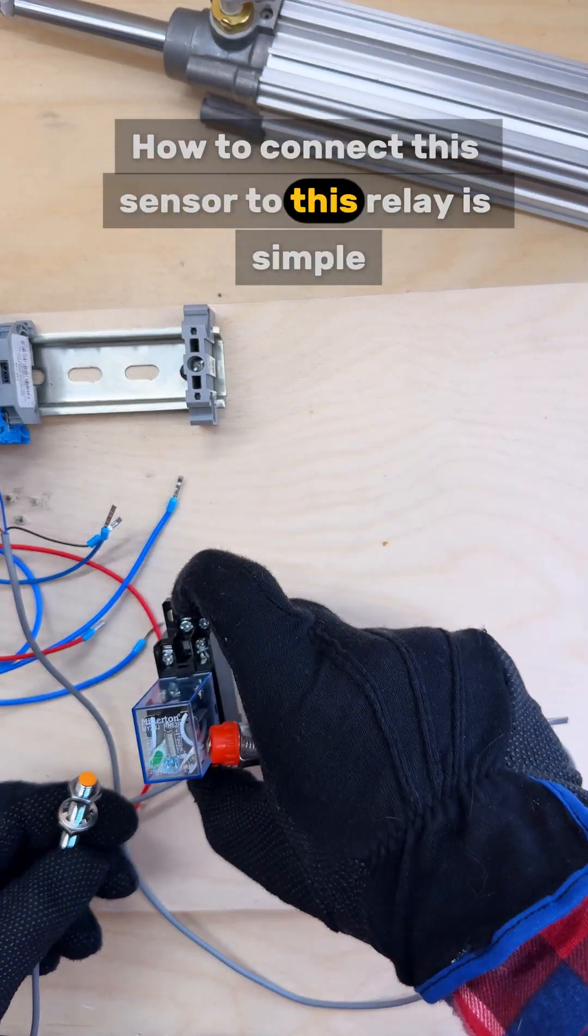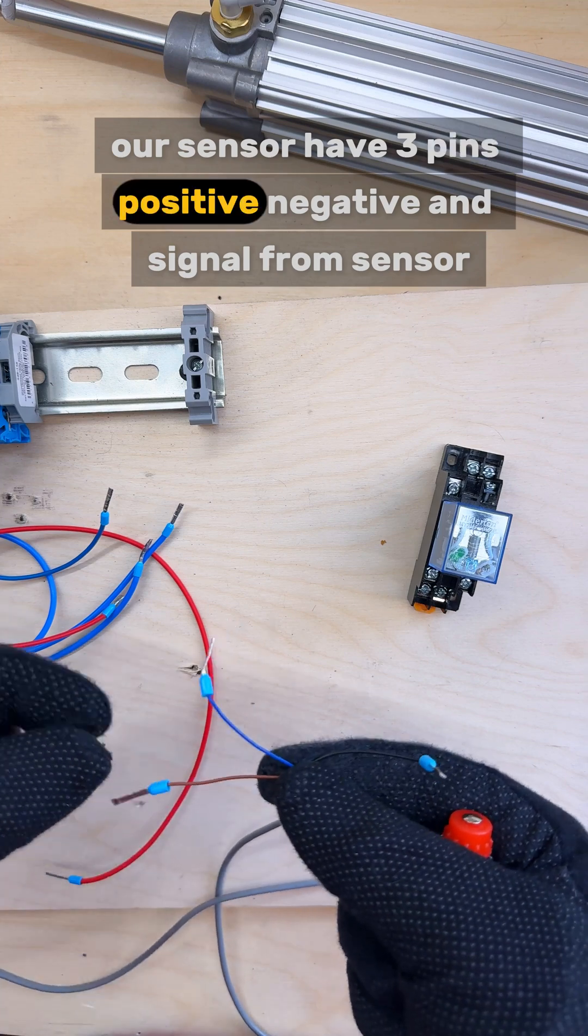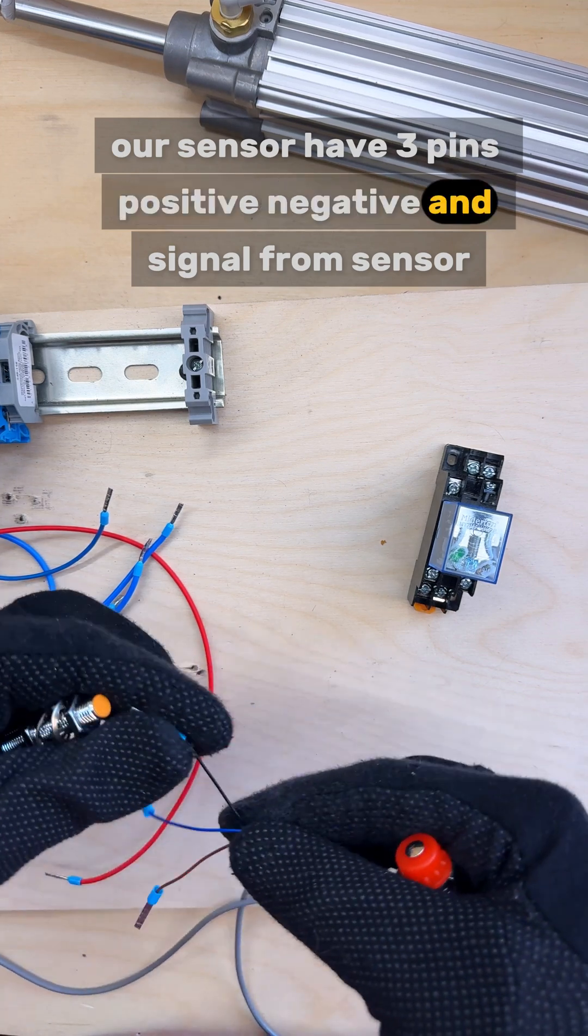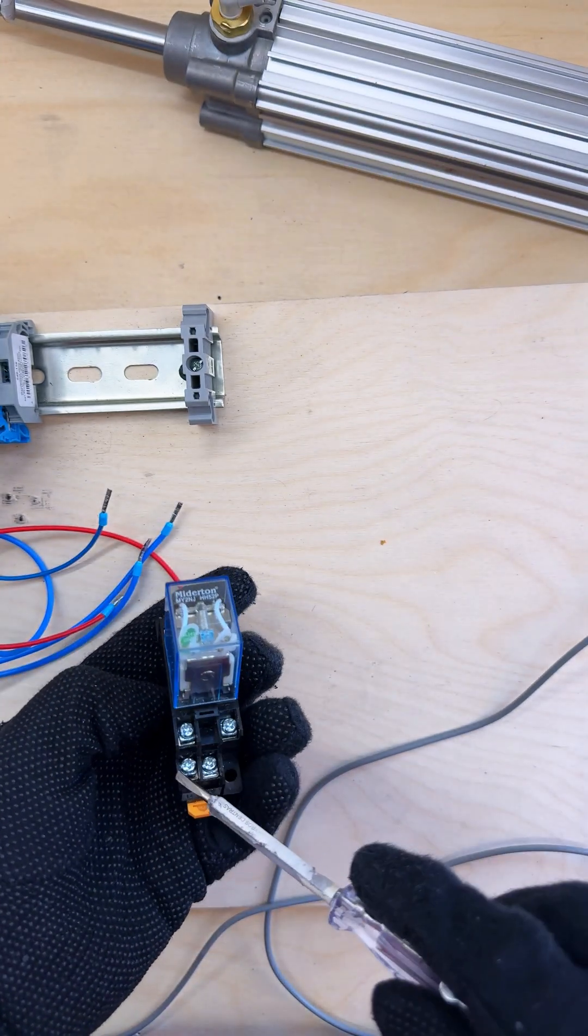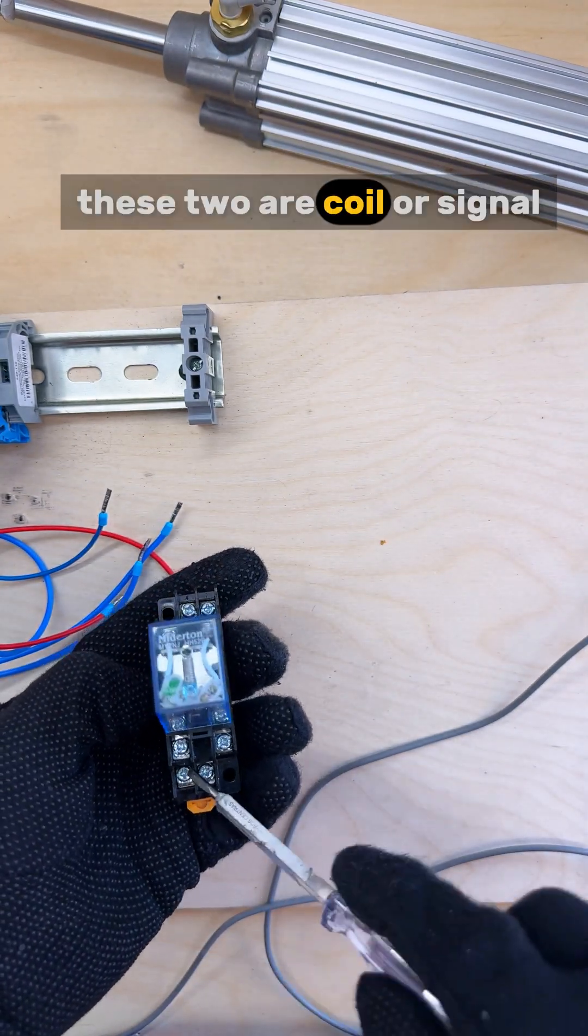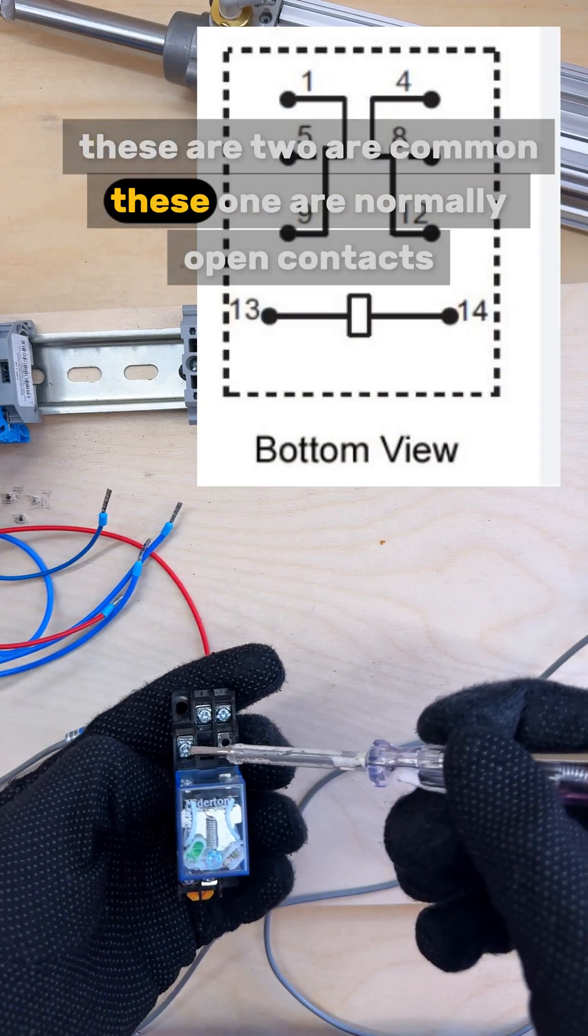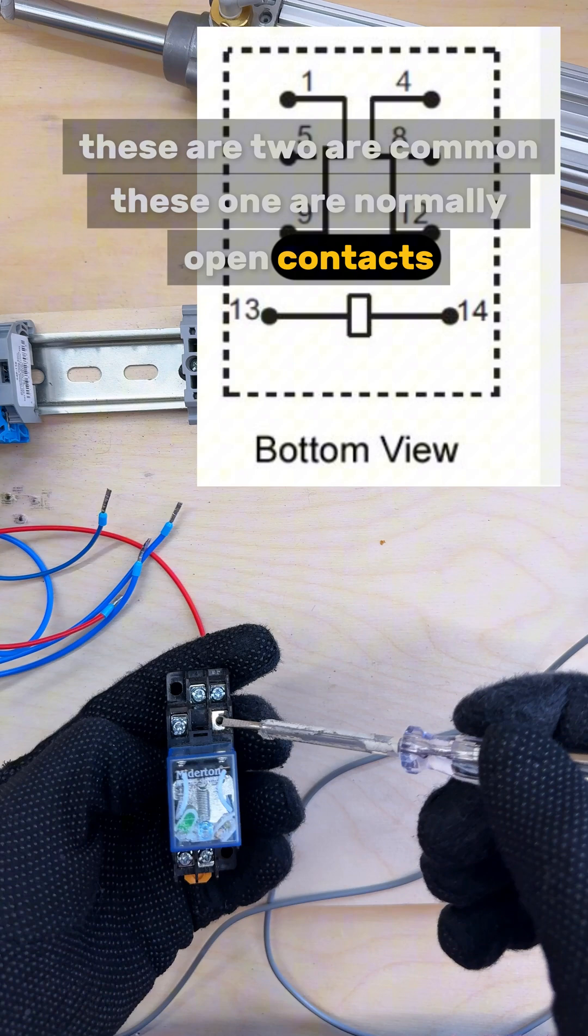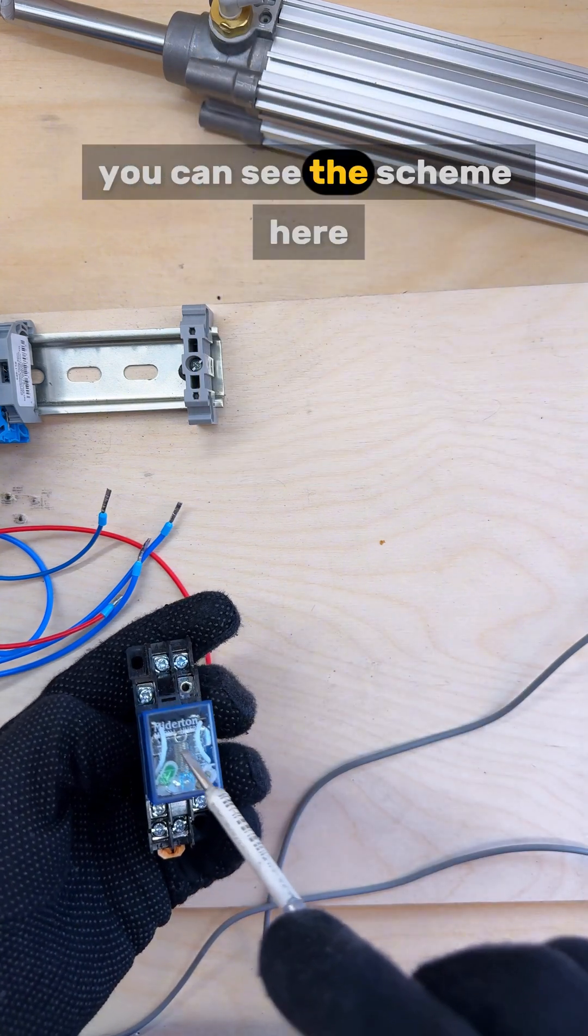How to connect this sensor to this relay is simple. Our sensor has three pins: positive, negative, and signal from sensor. Our relay has a lot of entries. These two are coil or signal, these two are common, this one is normally open contacts, and those are normally closed contacts. You can see the scheme here.